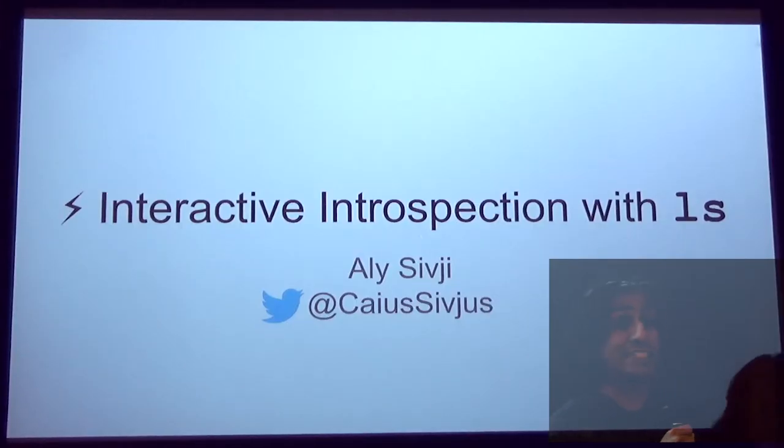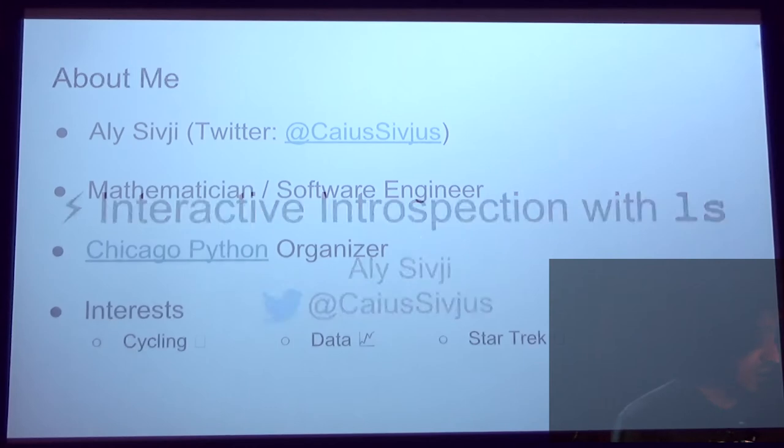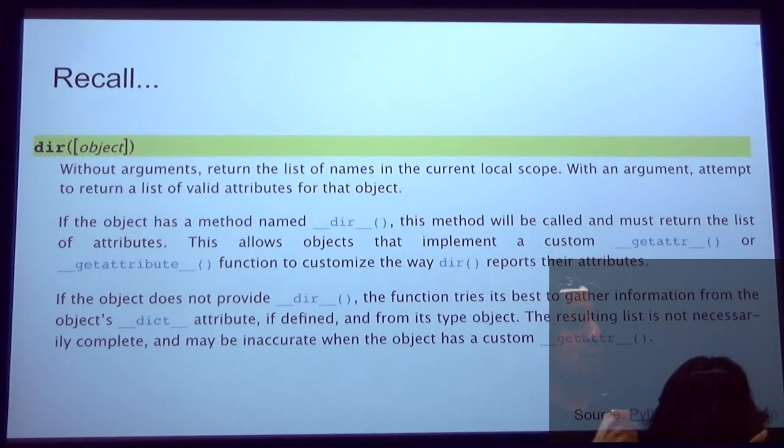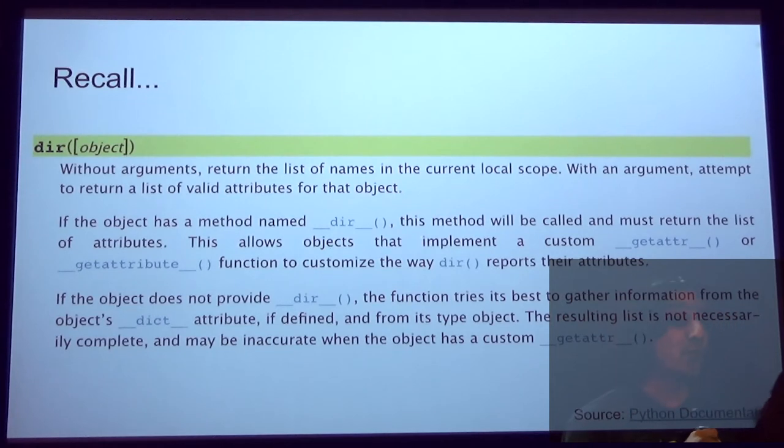All right, so tonight we're going to talk about a little utility that just came out a couple weeks ago called Python-LS. Nobody really cares about this. So we have the dir keyword, and this is part of the Python built-in standard library. And so you can use dir to get information about the objects you want to introspect or your local namespace.